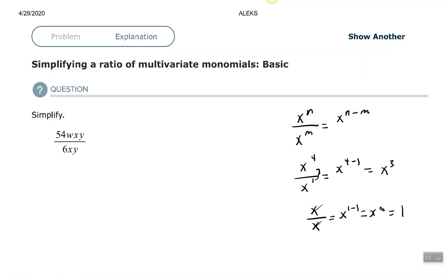So with this problem we have here, we have 54wxy over 6xy. So the 54 over 6, you treat as any normal fraction, how you would simplify any other fraction.